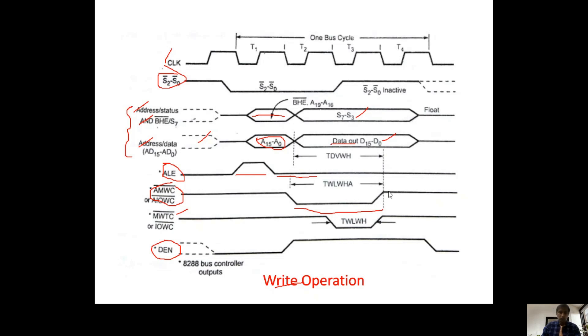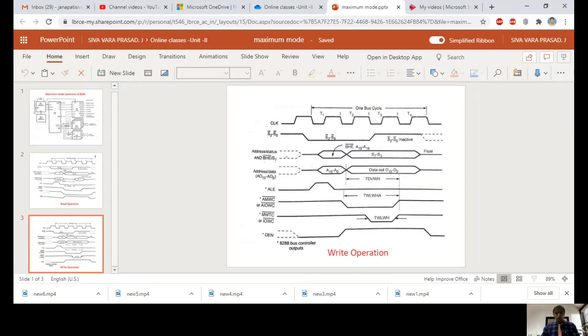Like that we can analyze read and write operations related to memory-mapped IO as well as IO-mapped IO easily. Thank you for watching this video. I hope you understand how to develop timing diagrams for maximum mode for both memory-mapped IO and IO-mapped IO, for both read and write operations. If you like it, please share and subscribe. For any suggestions or queries, please comment below.